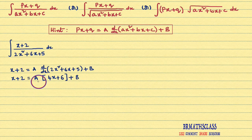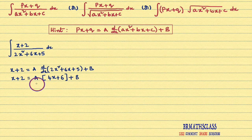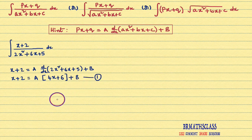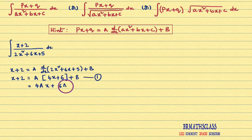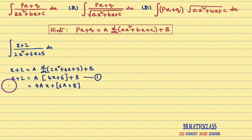Here we got that x+2 equals a into (4x+6) plus b. Our first target is to find the values of a and b. I'll name this equation 1. To find the values of a and b, I'll multiply this whole expression with a. What you will get is 4ax plus (6a+b).